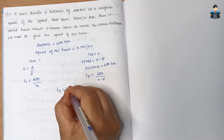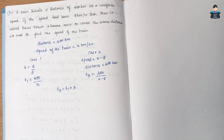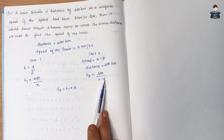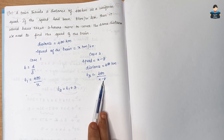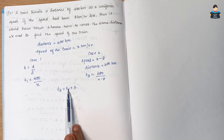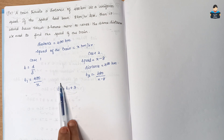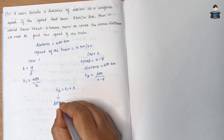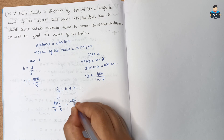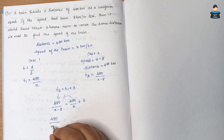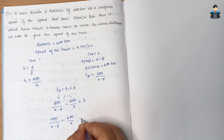T2 equals T1 plus 3. Substituting: 480/(x − 8) = 480/x + 3. Rearranging: 480/(x − 8) − 480/x = 3. Taking LCM: 480·[x − (x − 8)] / [x(x − 8)] = 3, which gives 480·8 / (x² − 8x) = 3, so 3840 = 3(x² − 8x).